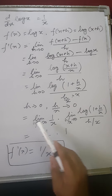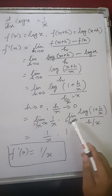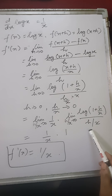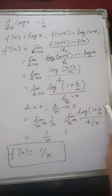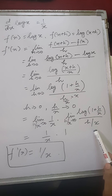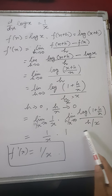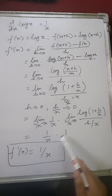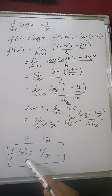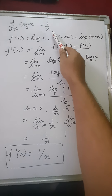So we can write: limit h/x tends to 0 of 1 upon x, into limit h/x tends to 0 of log(1 + h/x) all upon h/x. This result will be 1, since we know that limit h tends to 0 of log(1+h)/h equals 1, which we studied in Class 11 limits. So this has value 1 upon x, and the other part becomes 1. Therefore, f'(x) equals 1 upon x, meaning d by dx of log x is 1 upon x.